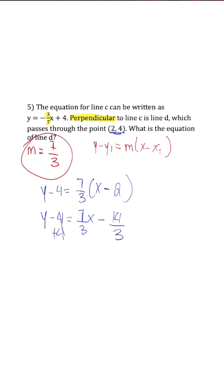Now we're going to add four on both sides. So y is equal to seven over three x.